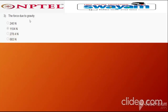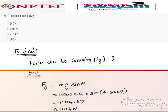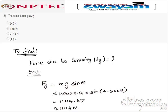Question three: force due to gravity. F_g = m × g × sin(θ). Substituting m = 1500, g = 9.81, and sin(θ) with θ = 4.3053°, we get approximately 1104 N. The correct answer is option two: 1104 N.